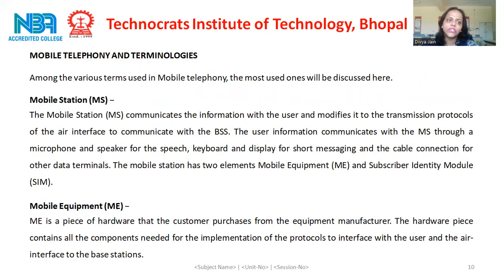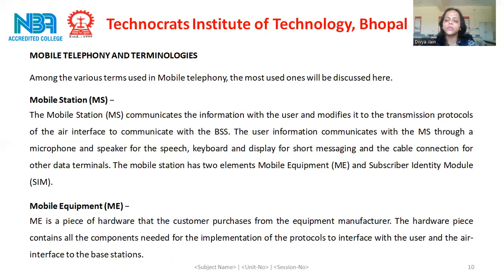The next feature of wireless communication is mobile telephony. Here I am discussing mobile telephony and the terminology related to it. Among the various terms used in mobile telephony, the most used ones will be discussed here. One part of mobile telephony is the mobile station. The mobile station, also called MS, communicates information with the user and modifies it to the transmission protocols of the air interface to communicate with the BSS. The user information communicates with the MS through a microphone and speaker for speech, keyboard and display for short messaging and cable connection for other data terminals.